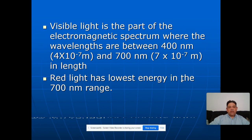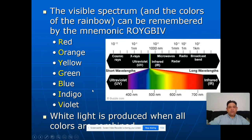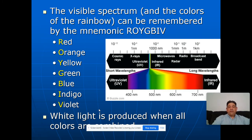We talked about visible light specifically because a lot of times our first clues about what was going on inside the atom were based on the light coming out of it. ROYGBIV are the colors of the visible light spectrum. They help you remember the colors in order from largest wavelength down to smallest wavelength, or lowest frequency to highest frequency. Remember that white light is produced when all the colors are combined.